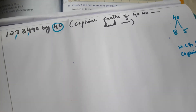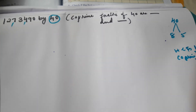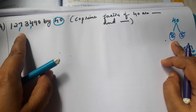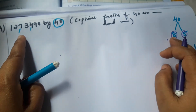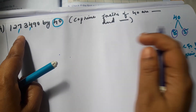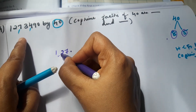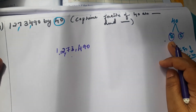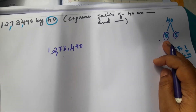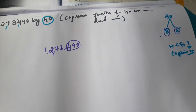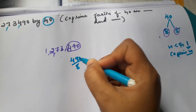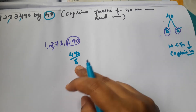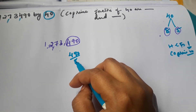Now check with 8 and 5 using their divisibility rules. According to the rule for 8: the last three digits should be divisible by 8. Here the last three digits of 12,73,490 are 490. We have to check whether 490 is divisible by 8.